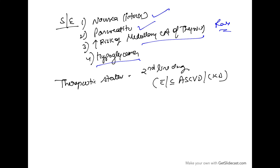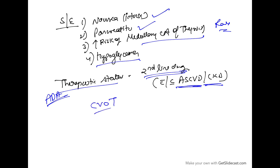Regarding therapeutic status, as per the American Diabetes Association, these are second-line drugs in diabetes management — whether the patient has atherosclerotic cardiovascular disease or CKD, or even if they do not have it. They are second-line because cardiovascular outcome trials have shown they decrease cardiovascular mortalities and major adverse cardiovascular events (MACE). That is why they are now used as a second-line agent regardless of cardiovascular or CKD status.